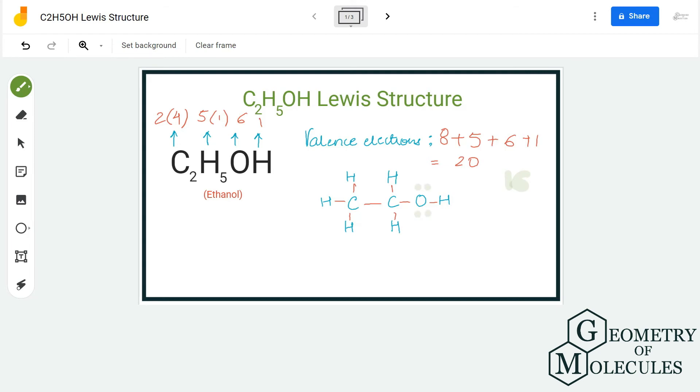So oxygen will have two lone pairs of electrons but will have a complete octet. Now you can also count the number of electrons for each atom, and you will see that the octets of all these atoms are complete. Carbon has eight valence electrons in its outer shell, hydrogen has two valence electrons in its outer shell, and oxygen atom has eight electrons in its outer shell. So all the octets of the atoms are complete, and this is a Lewis structure for C2H5OH or ethanol.